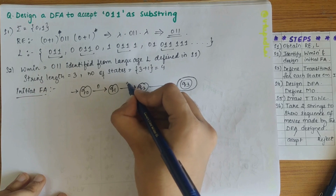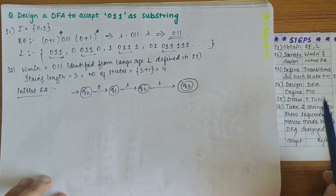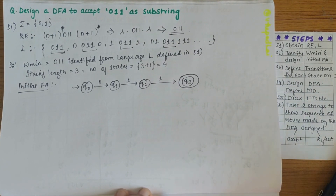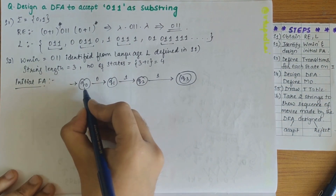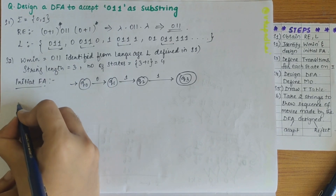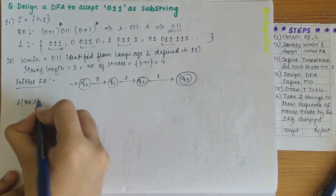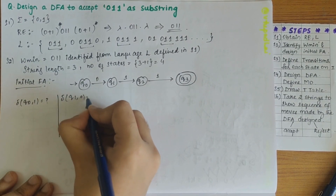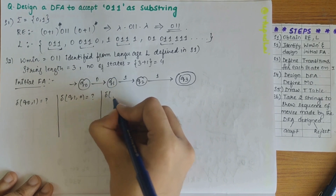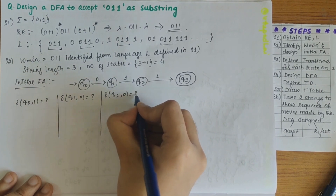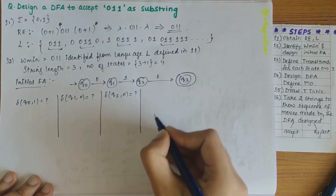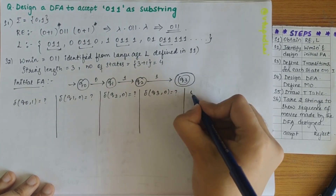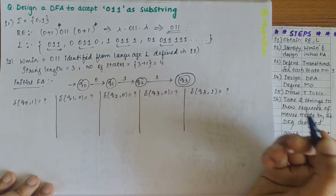We have 011 here — 0, 1, and 1 — mapped across the states. Now step 3 is to define transitions for each state on each symbol in sigma. Q0 on 0 is already defined, but the transition of Q0 on 1 is unknown. Similarly, transition of Q1 on 0 is unknown, transition of Q2 on 0 is unknown, and transitions of Q3 on 0 and Q3 on 1 are unknown.